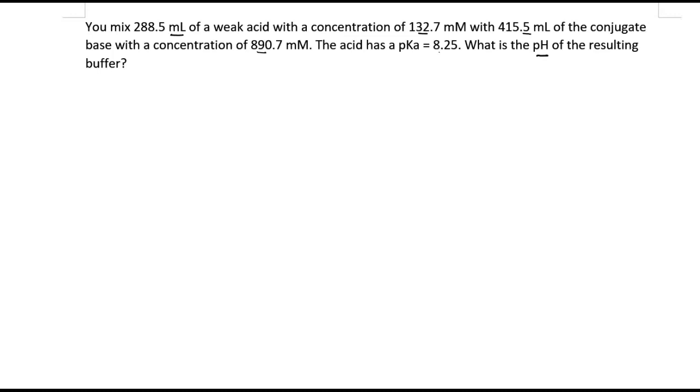First of all, let's write down the Henderson-Hasselbalch equation: pH equals pKa minus the logarithm to base 10 of the acid concentration divided by the base concentration. Now the big problem is that we don't have the acid nor the base concentration and we have to calculate them.